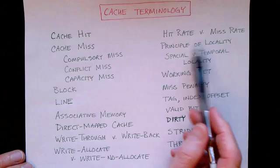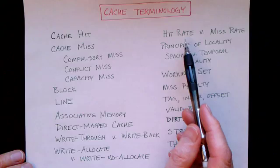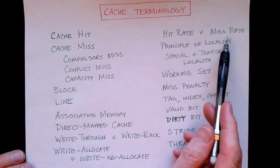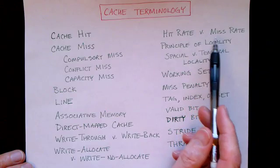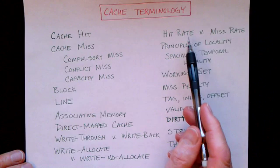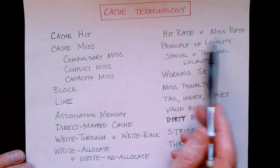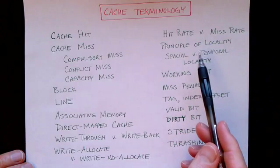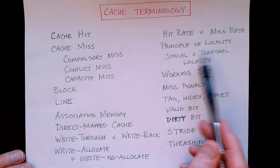We talked a little bit about hit rate and miss rate. Whenever we have a hit, that's good, and whenever we have a miss, that's bad. Each access to the cache is either a cache hit or a cache miss, so these two sum to 100%. We talked about the principle of locality.